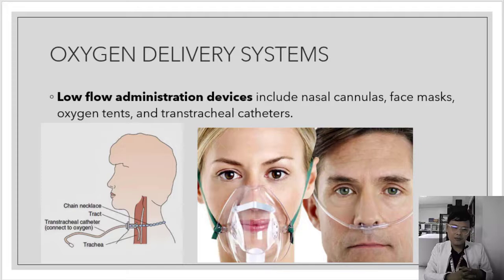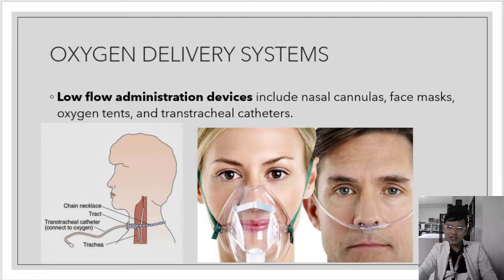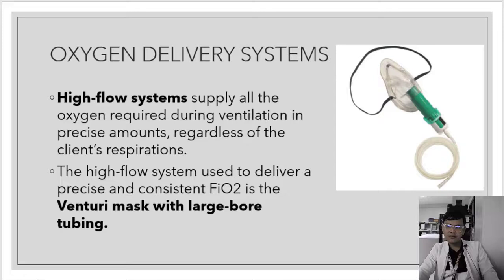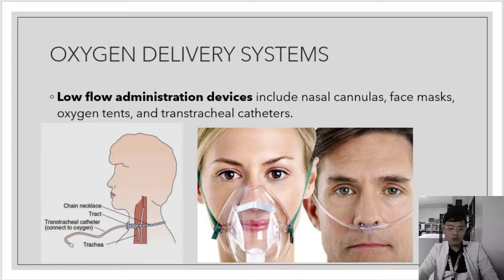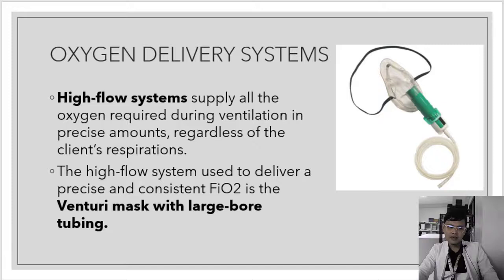The high flow system uses a venturi mask with large bore tubing, delivering more oxygen to the patient compared to the low flow system. Low flow devices deliver less oxygen, while the high flow system using the venturi mask delivers greater amounts. Let's go through each device individually, starting with the nasal cannula.